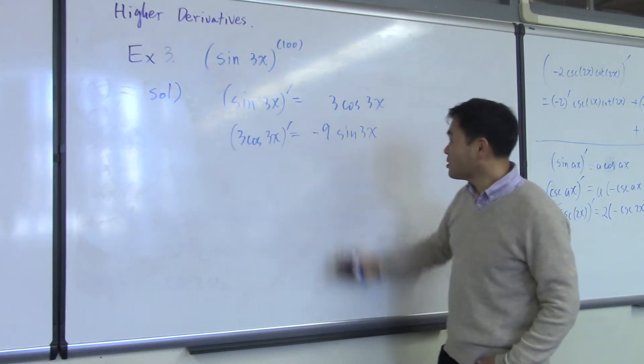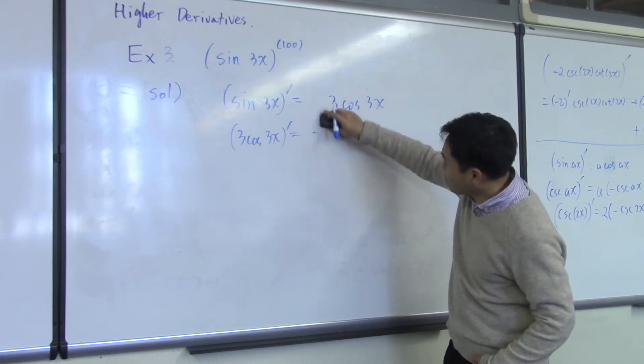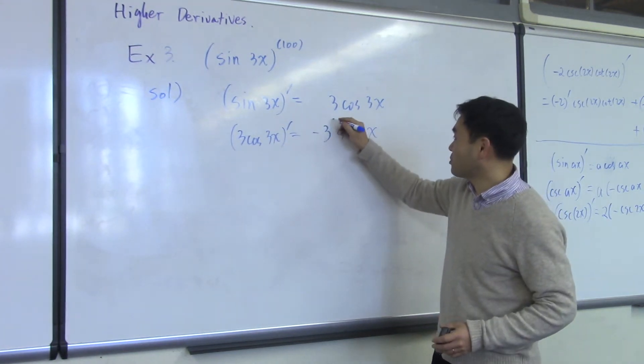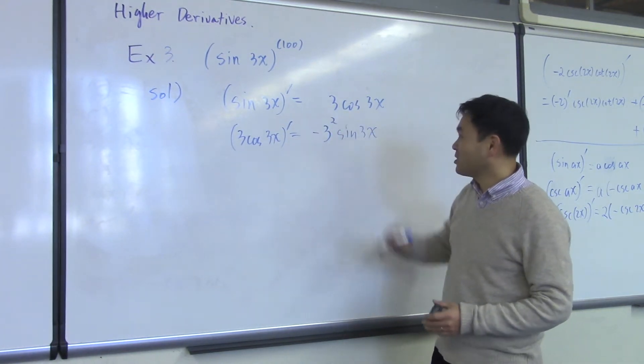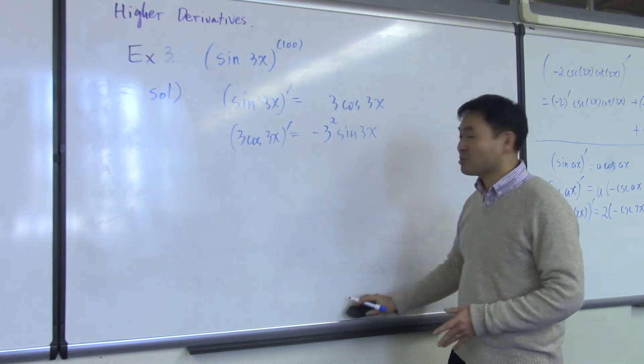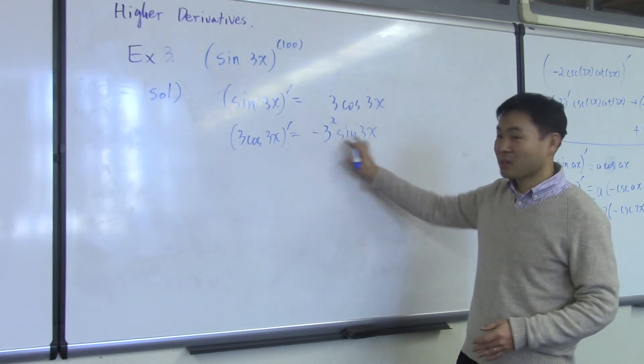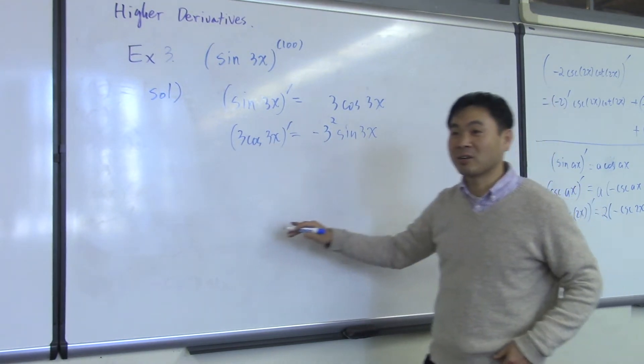The trick is, instead of putting 9 there, you want to put 3 squared. Because you're going to do this 100 times, and you don't want to be calculating all the time.